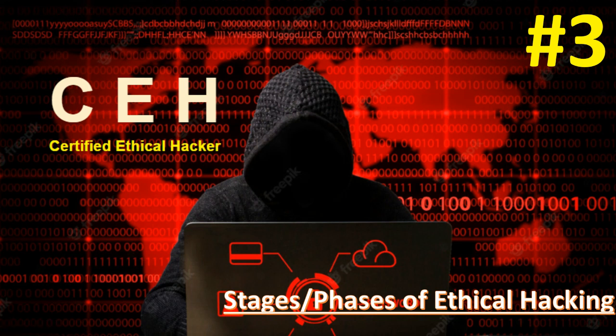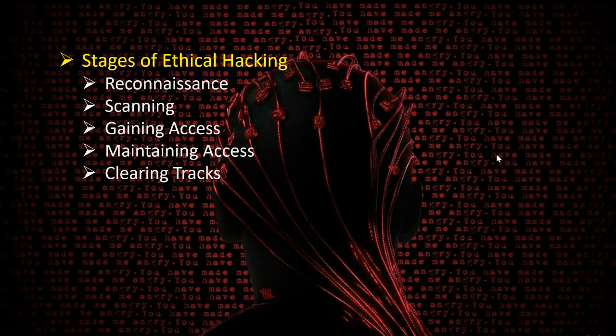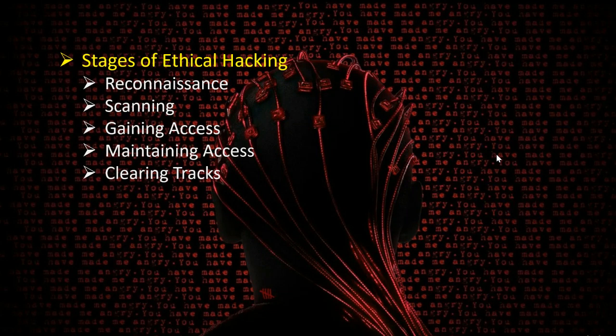Hello guys, welcome to the Security Red vs Blue Team channel. In today's video we cover the stages or phases of ethical hacking. Whenever we want to attack a particular target, we mainly follow these important stages: reconnaissance (information gathering), scanning, gaining access, maintaining access, and finally clearing the tracks so the attacker doesn't get caught.